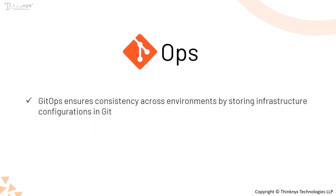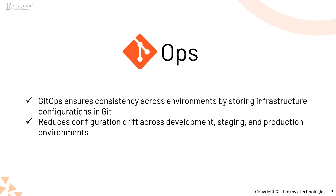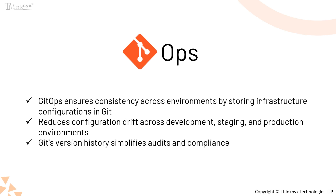Additionally, GitOps ensures consistency across environments. Since the entire infrastructure configuration is stored in Git, it becomes easy to replicate the same setup across development, staging, and production environments, thereby reducing configuration drift. This model also simplifies audit trails and compliance checks, as all changes are tracked through Git's version history.